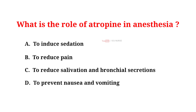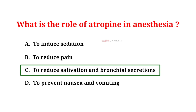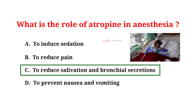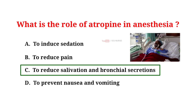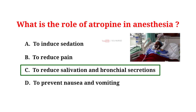What is the role of atropin in anesthesia? A. To induce sedation, B. To reduce pain, C. To reduce salivation and bronchial secretions, D. To prevent nausea and vomiting. The correct answer is C. To reduce salivation and bronchial secretions. Atropin is used in anesthesia to reduce salivation and bronchial secretions, which can be a problem during intubation and extubation. Atropin can also be used to prevent bradycardia during anesthesia induction.